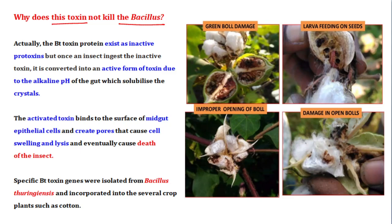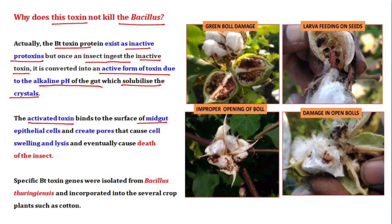The Bt toxic protein from Bacillus exists initially as an inactive pro-toxin form. In the gut's alkaline pH, it converts to its active toxin form. Crystals form and damage the intestinal wall, creating pores. The activated toxin binds to the surface of mid-gut epithelial cells, creates perforations, and eventually causes the death of the insect.